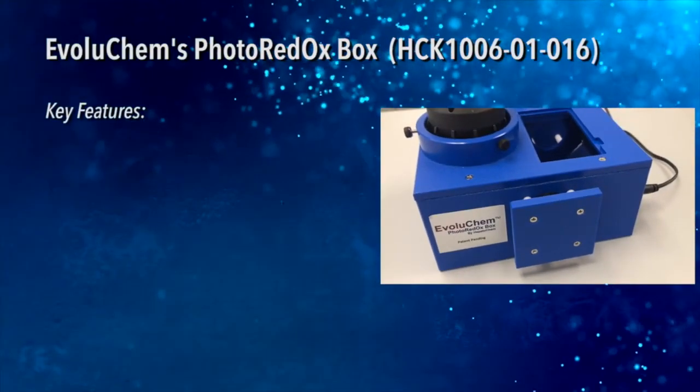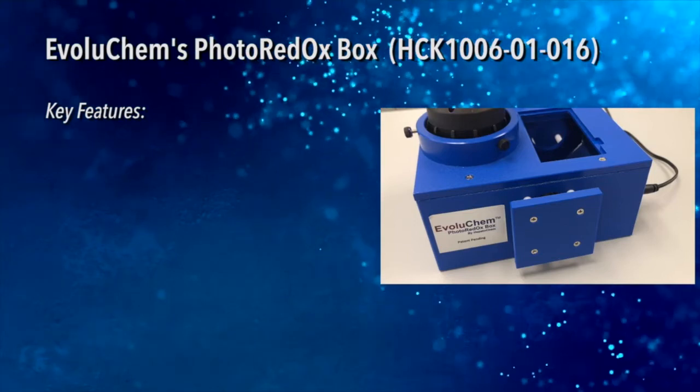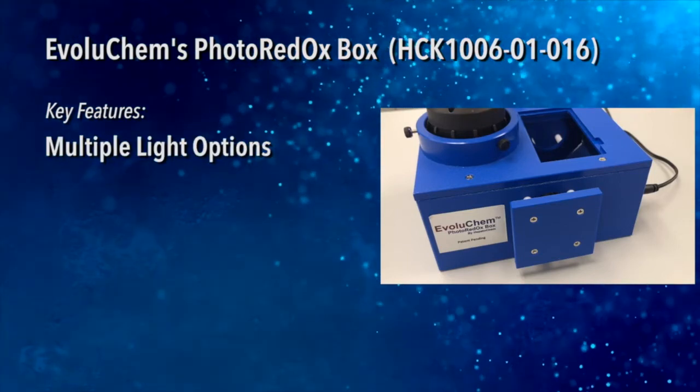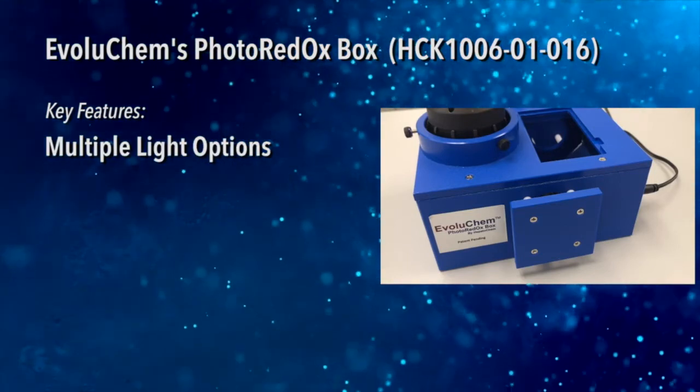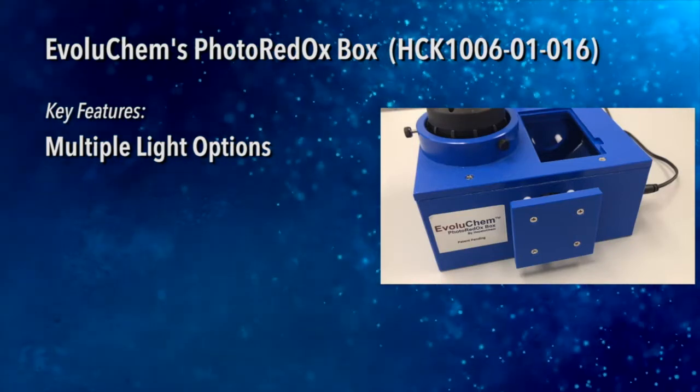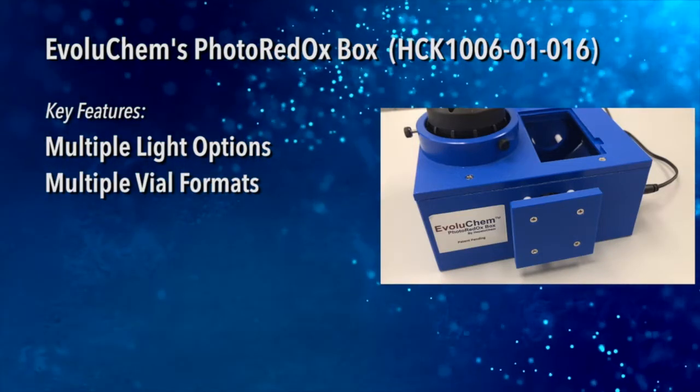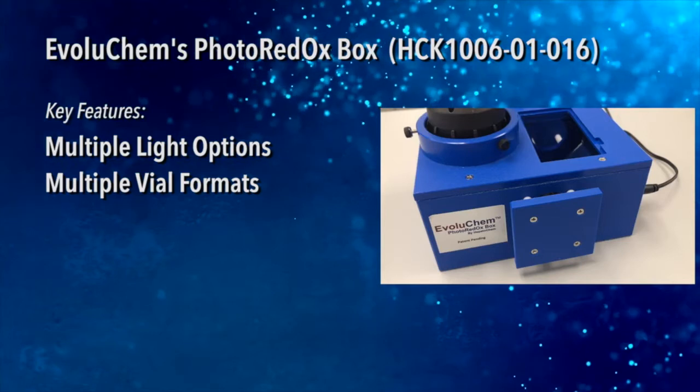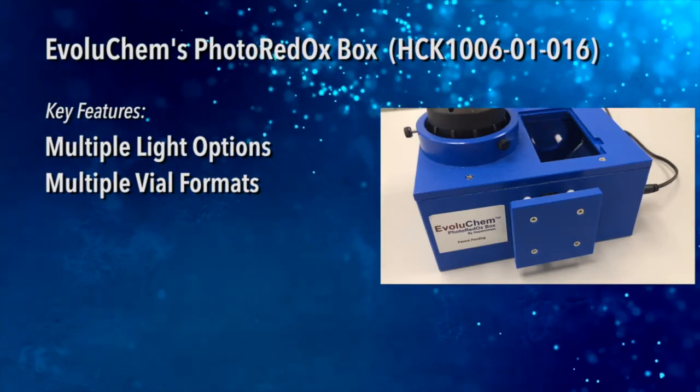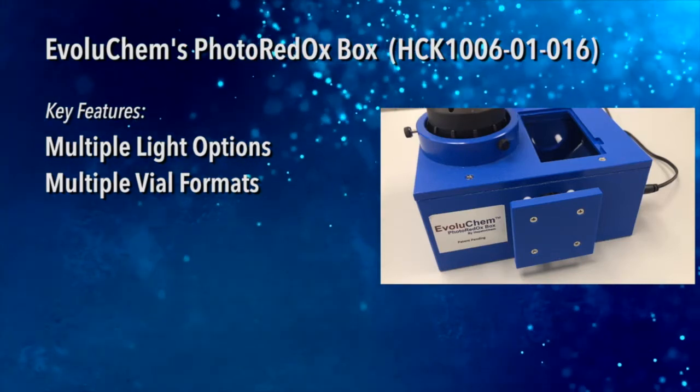Key features of the photoredox box include the following. It accommodates most light sources including a large selection of EvaluChem branded options. Vial holders are available for 20 mL, 8 mL, 4 mL, 2 mL, and 0.3 mL formats.